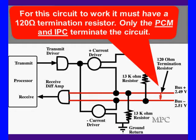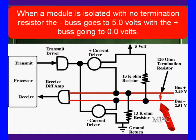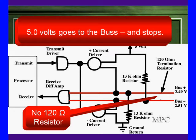For this circuit to work, it must have a 120 ohm termination resistor. And only the PCM and IPC terminate the circuit. We've opened it up. They're no longer terminating the circuit. So, what we're going to have to do is if everything is working, we're going to see five volts on the minus, with the plus going to zero. That means there's no termination. We've isolated a module. It doesn't have a termination resistor. This would also be the situation you would have if you had broken wires. Five volts goes to B plus, goes to bus minus, and then stops. It has no place to go. There is no resistor.